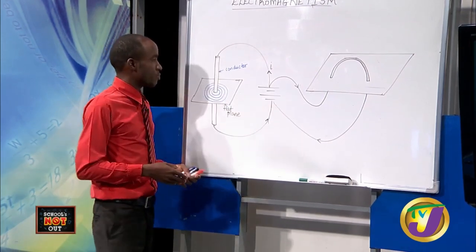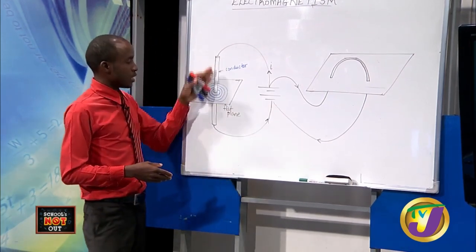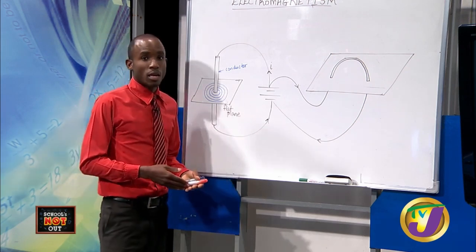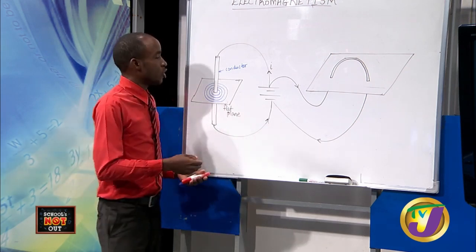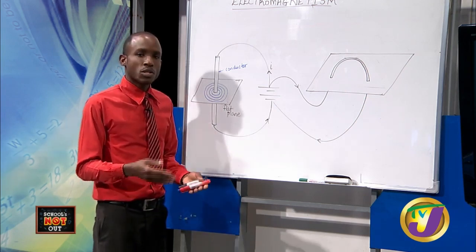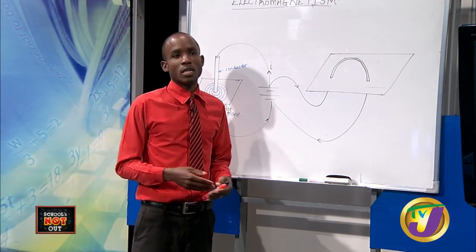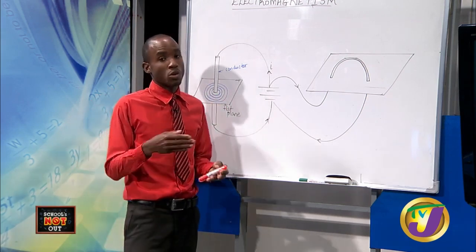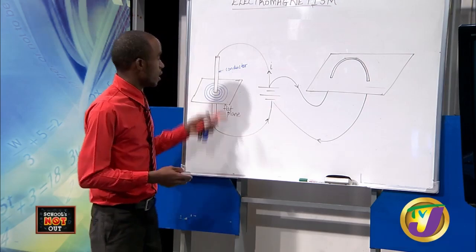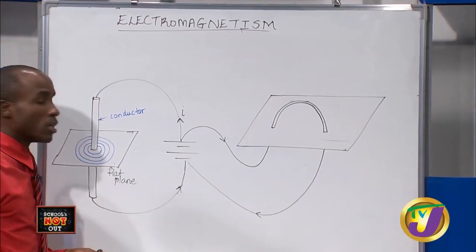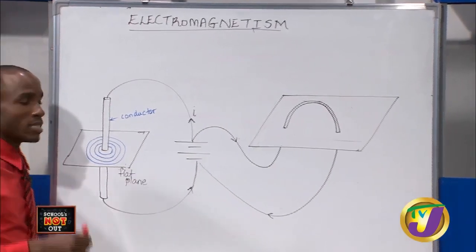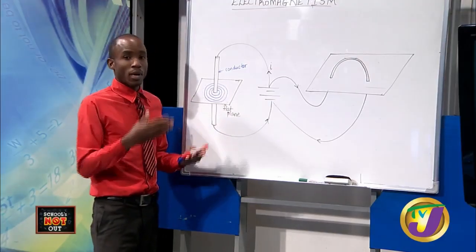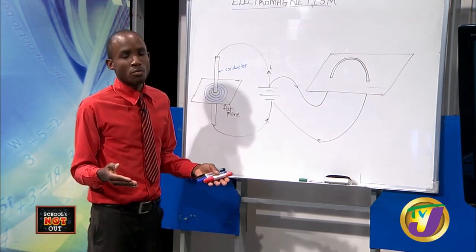Here I have set up a current-carrying conductor. A current-carrying conductor can be any wire that carries an electrical current through it. Most persons associate electrical current with shocking and powering electrical devices. But what you ought to be aware of is that a current carried through a conductor has an associated magnetic field. When a current flows, magnetism appears — they are mutually linked.